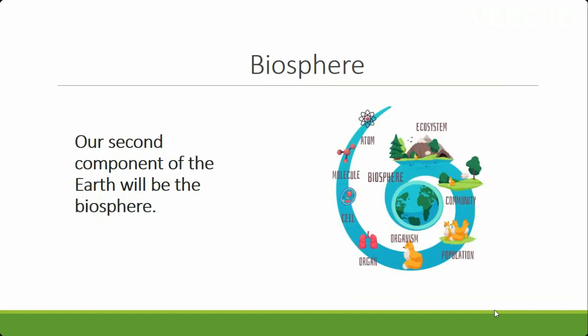Our second component of the earth structure is going to be the biosphere. This component is going to be covering all living things that are found within ecosystems on the land. It can be broken down into different substructures where we can discuss the organisms, the community, living things, and the cycle within living things. This is a very broad component and we're going to be tuning into how it's connected to the earth structure and the importance of it.